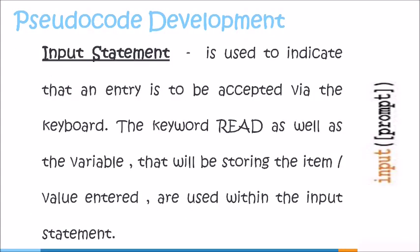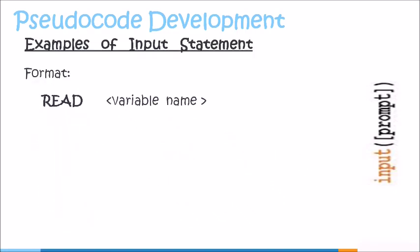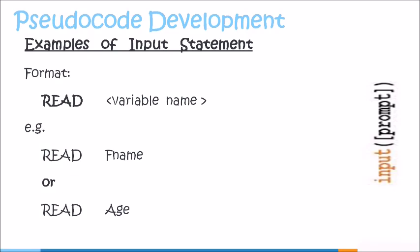An input statement is used to indicate that an entry is to be accepted via the keyboard. The keyword read, as well as the variable that will be storing the item or value entered, are used within the input statement. The format shows the keyword read as well as the variable name of the variable being used to accept whatever is entered by the user. In our example, we have the keyword read followed by the variable name fname, as well as read and the variable name age.